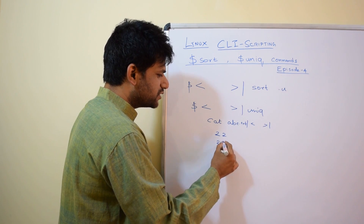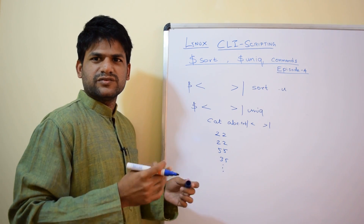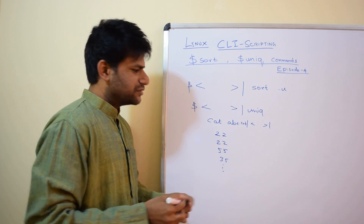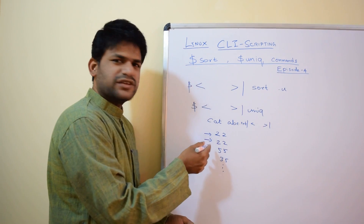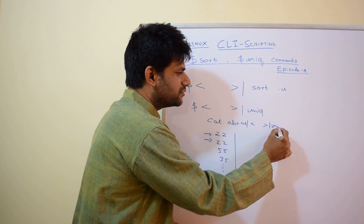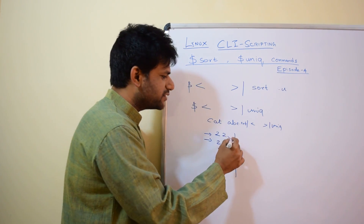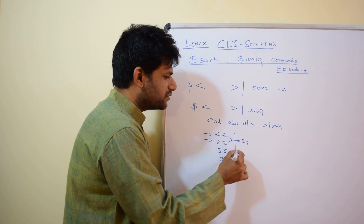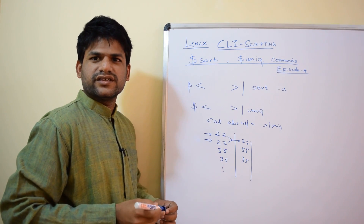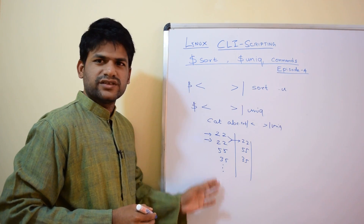Say the output is returning ages like 22, 22, 55, 35 — if you want to find a unique age range and there are two identical entries right after each other, uniq will check for repeating patterns and return only unique entries, removing duplicates. However, it doesn't work if the output is unsorted or jumbled.